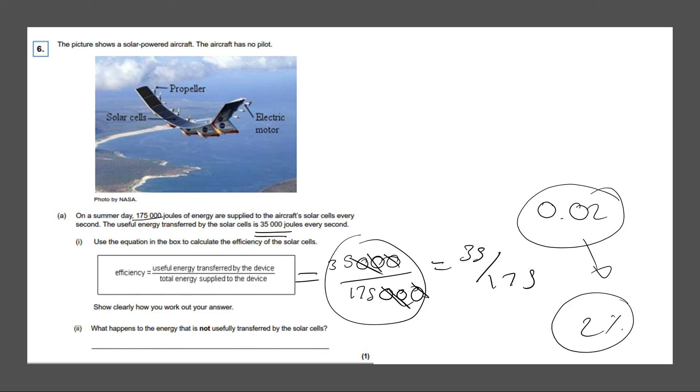What happens to the energy that is not usefully transferred by the solar cells. So if it's not usefully transferred, well then it's clearly wasted energy. It is wasted or in scientific terms, it is dissipated. And I will give you one mark.